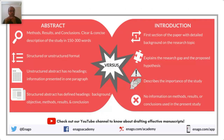What is the difference between abstract and introduction? Abstract is just methods, results, and conclusions — it can be structured (with introduction, methods, results, conclusions and future perspectives written under separate headings) or unstructured, depending on the university. In introduction, it is the first section of the paper — it explains the research gap and proposed hypothesis, describes the importance of the study. You don't put in methods, results or conclusions in the introduction. One should clearly understand this difference between abstract and introduction.